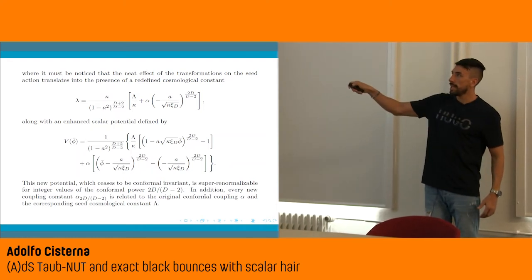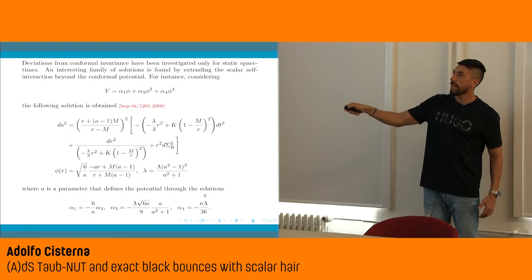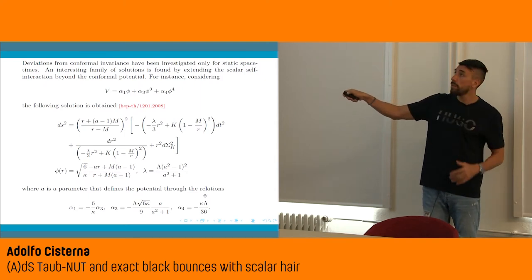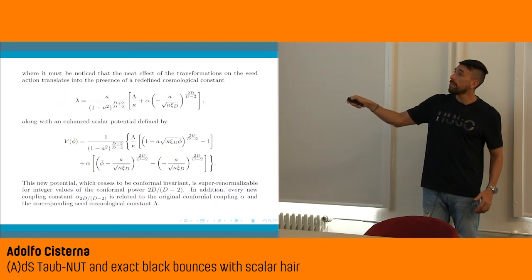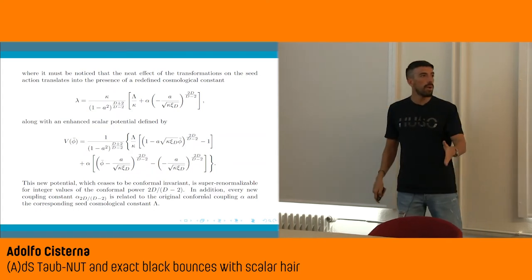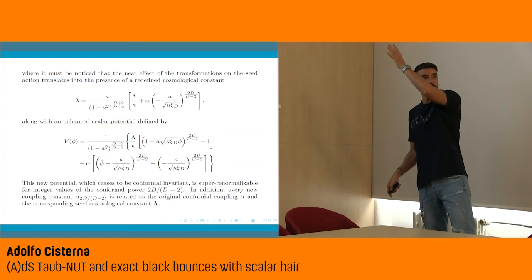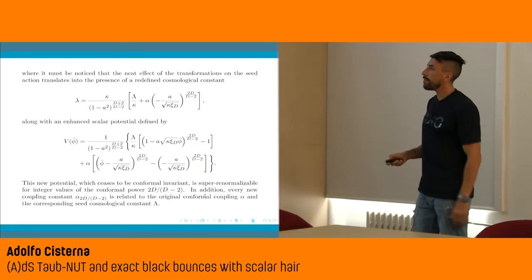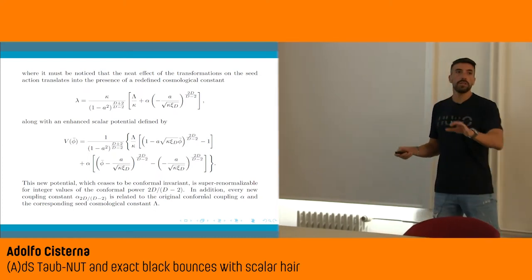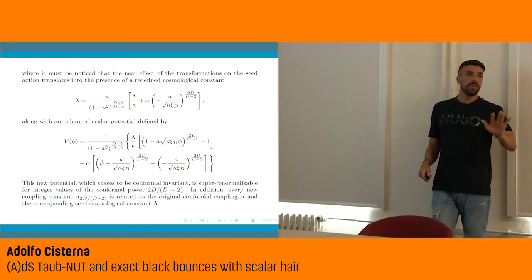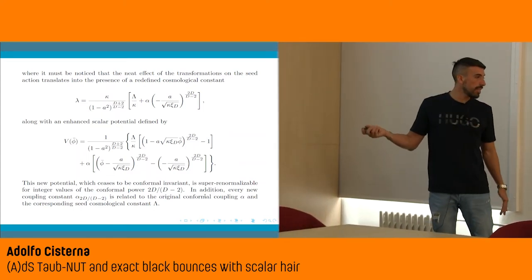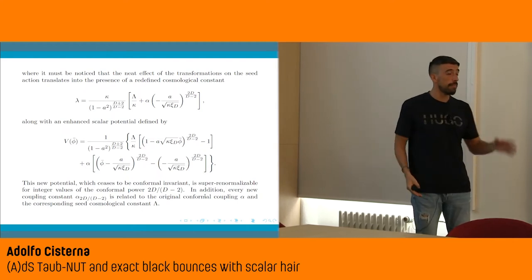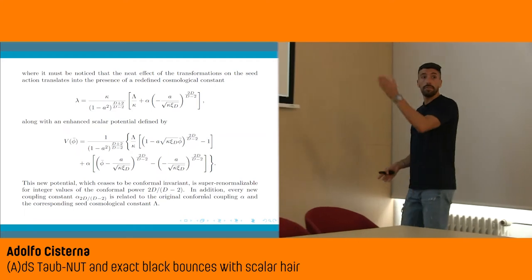This potential is interesting because, when electromagnetic charges are also included, in dimensions 3, 4, and 6 it is known as the super-renormalizable potential, because it contains all natural powers of the scalar field. For example, in dimension 4 we have φ, φ², φ³, φ⁴. So what they did was find the particular transformations connecting these two theories.